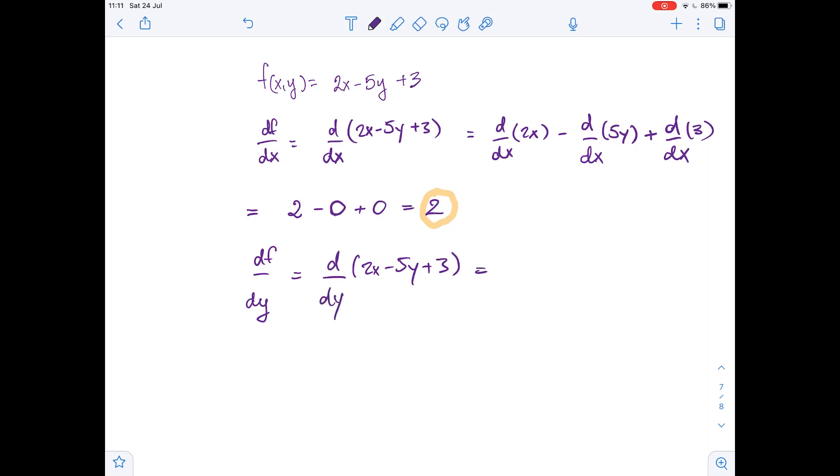Here, we will treat x as a constant, so the derivative of 2x with respect to y equals 0, the derivative of negative 5y with respect to y equals negative 5, and the derivative of 3 with respect to y equals 0 because it's a constant. So the first partial derivative of f with respect to y equals negative 5.